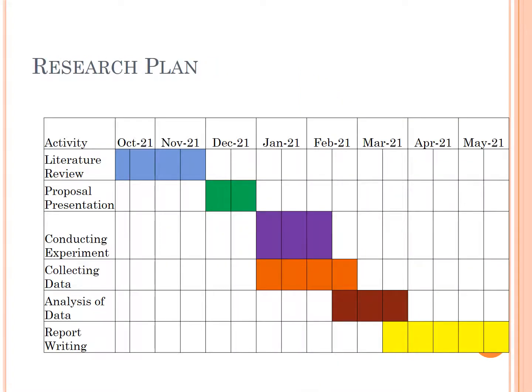For my research plan: literature review will be conducted from October to November; proposal presentation in December; experiments from January to the second week of February, with data collection throughout; data analysis from the last week of February through March; and finally, the report will be written from March until May.